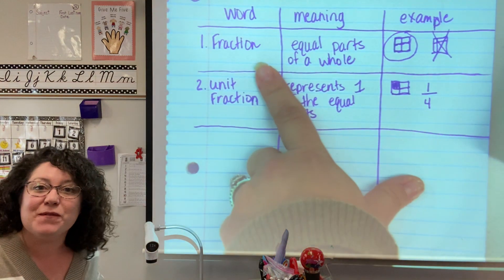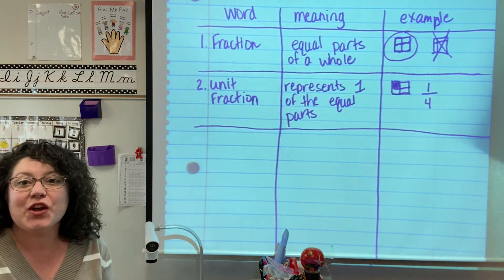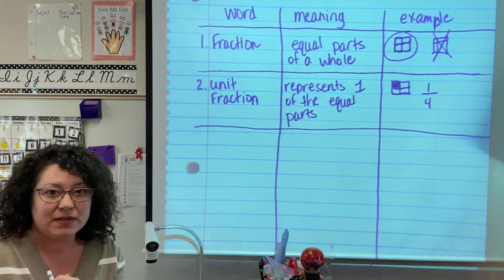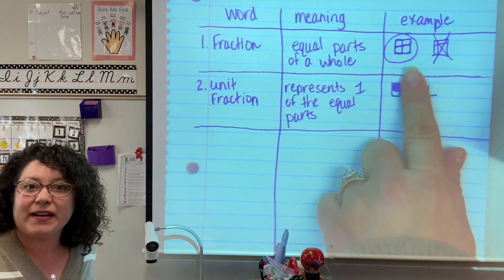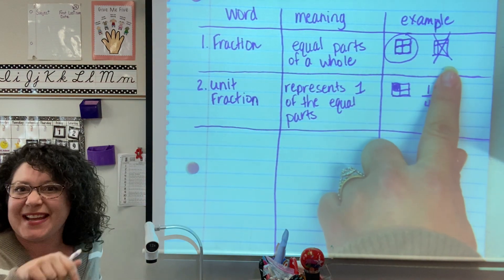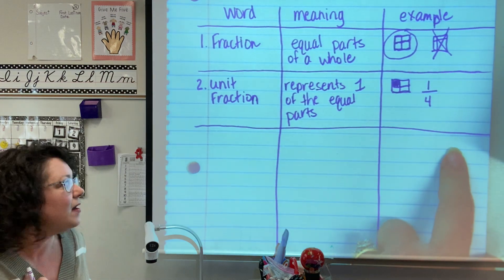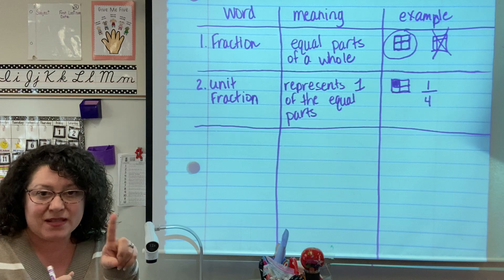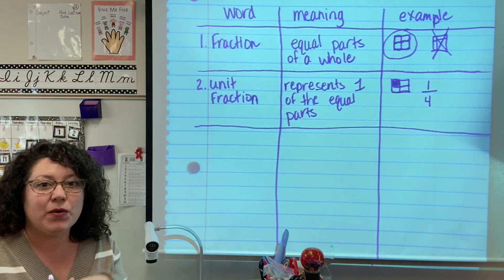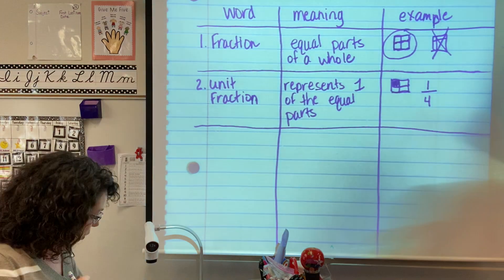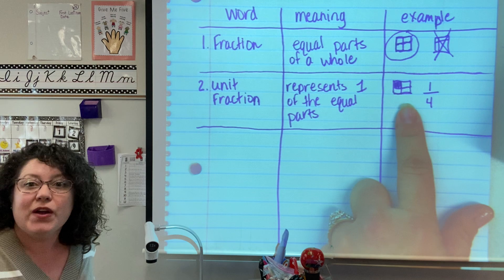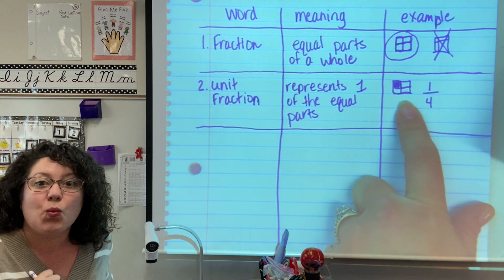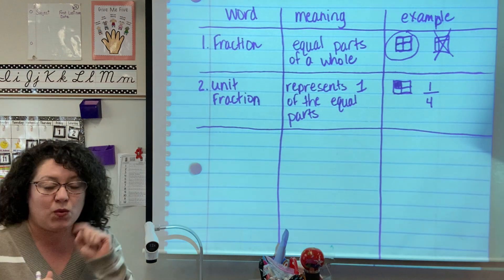We are going to review fractions. Fractions are the equal parts of one whole shape — they have to be equal. We had our example and our non-example, and then we also talked about unit fractions that represent one piece of the whole shape. So it's one-fourth over here. There are four pieces all together, and the unit fraction is one-fourth because remember, unit means one.